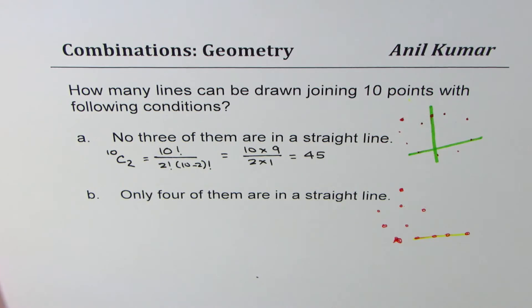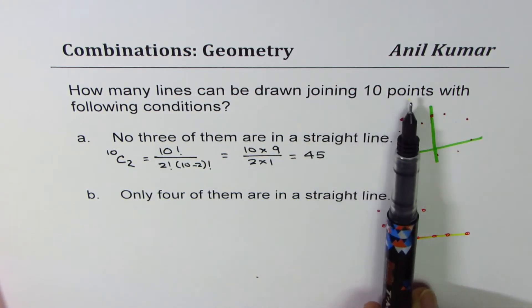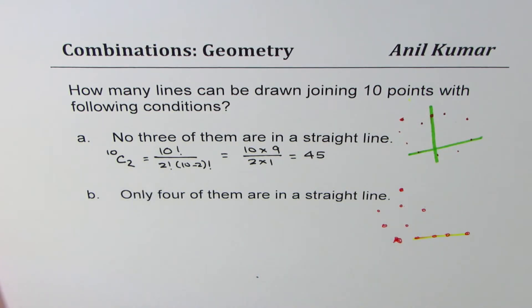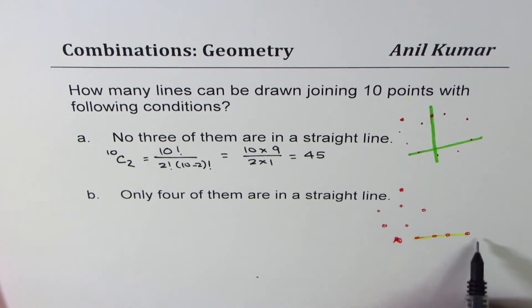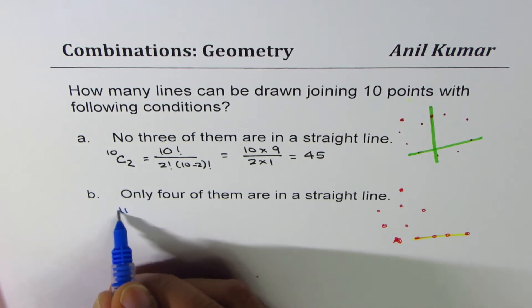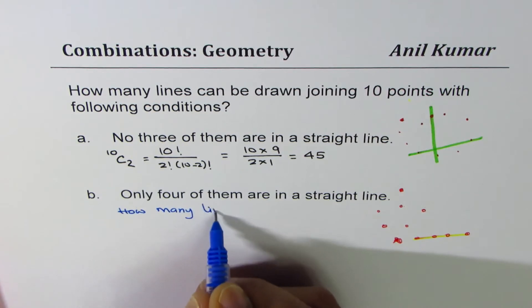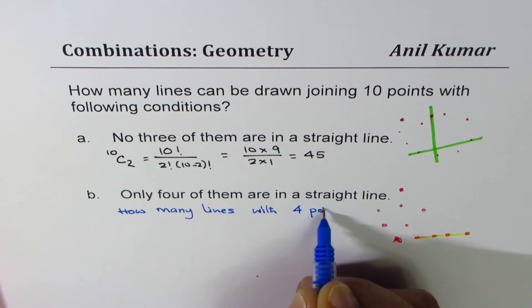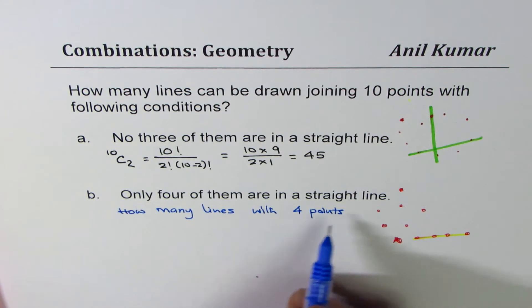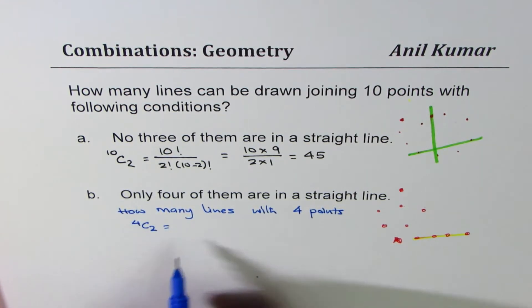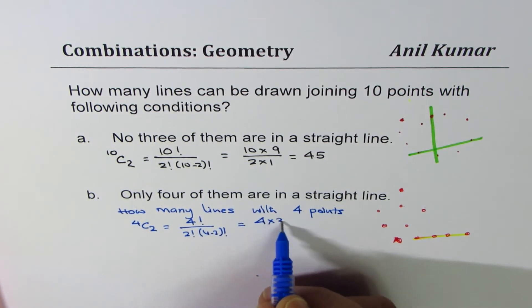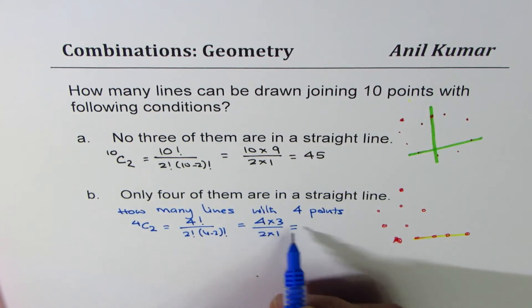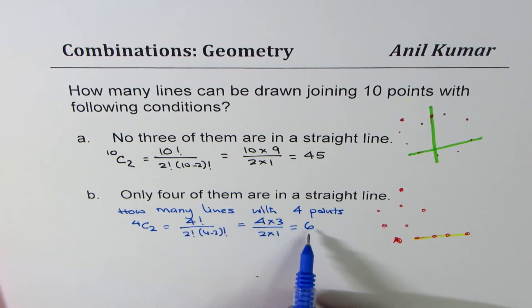Six points are not in a straight line, but four are collinear. In Part A we found that with 10 points the maximum number of lines is 10C2, which is 45. Now, how many lines can you make with just four points? Since we need two points per line, it will be 4C2. That equals 4 factorial over 2 factorial times 2 factorial, which is 4 times 3 over 2 times 1 — that is 6. So there are 6 lines which can be formed by four points.